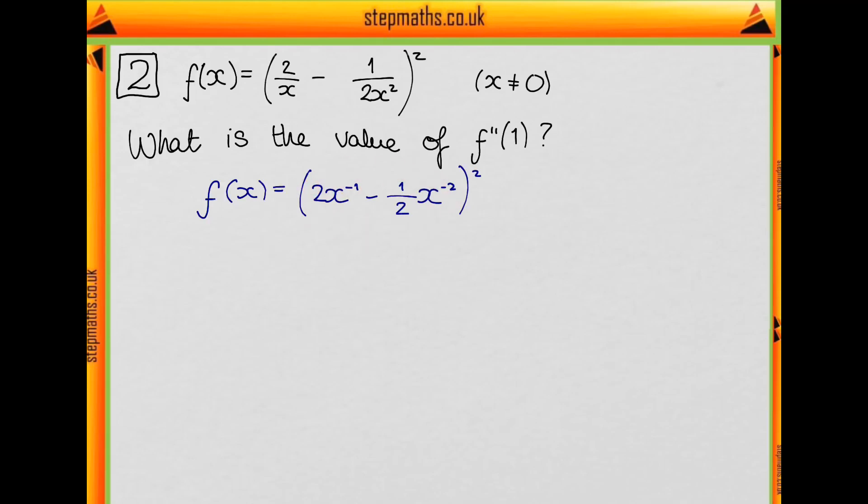Okay, so remember when we differentiate something like this, we need to bring the power down the front, differentiate everything inside the brackets, and then have whatever the power 1 less than is. So we have the 2 comes down the front.